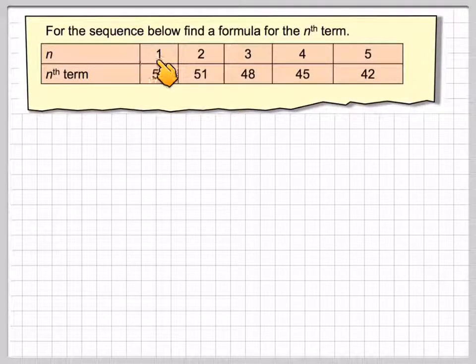For a sequence below, find a formula for the nth term. We've got n terms where the first term is 54, the second term is 51, the third one is 48, the fourth one is 45, and the fifth one is 42.